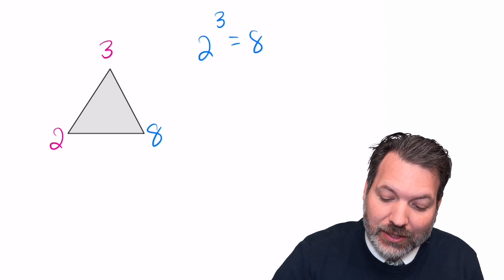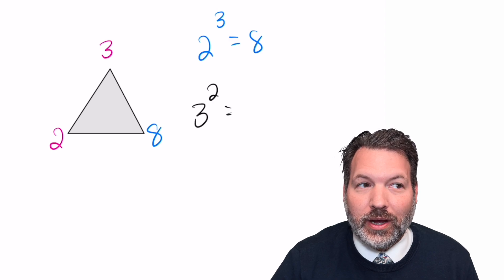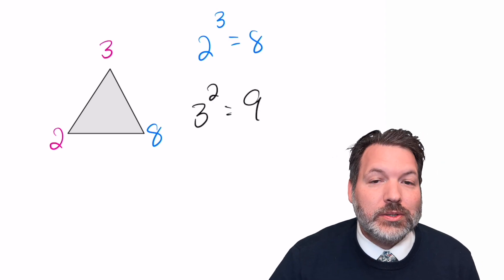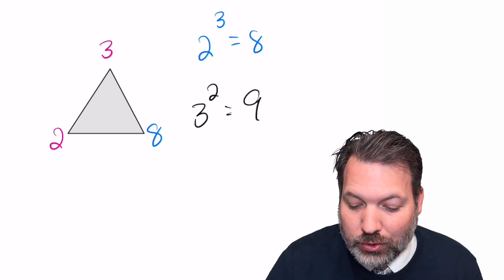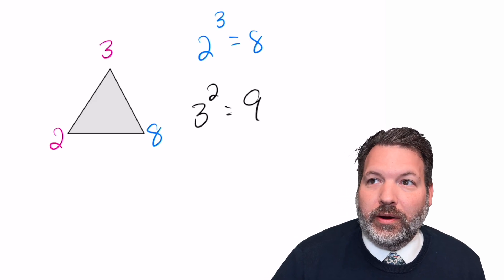2 to the third is 8, but if I flip around the base and the exponent there, 3 squared is not 8. 3 squared happens to be 9. And if you choose other numbers, the differences are only going to get greater from there. In fact, other than trivial cases where the base and the exponent are the same, there's only one case I know of where you can switch the base and the exponent and you get back the same result.